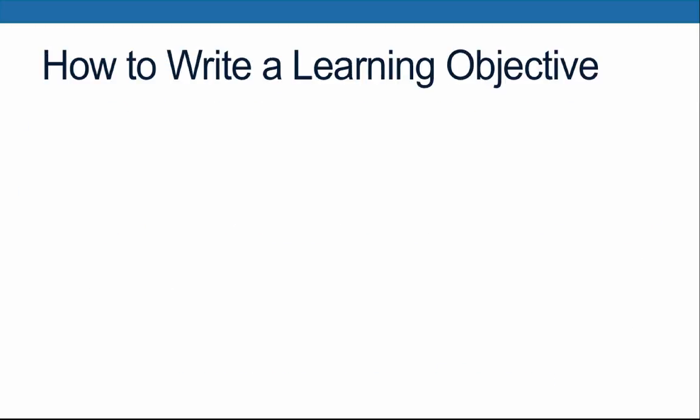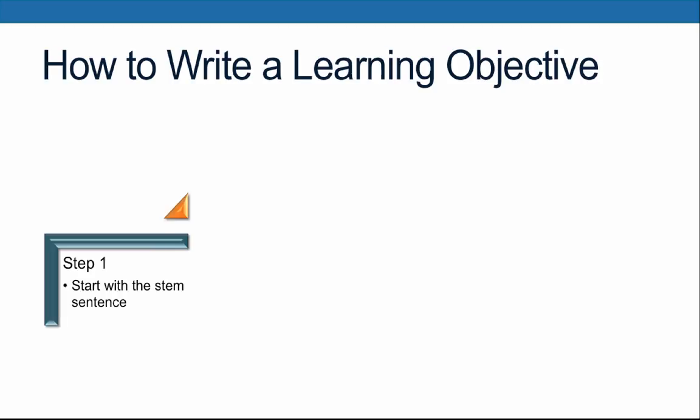Now that we understand Bloom's Taxonomy, let's use what we've learned to construct a measurable learning objective. First, you should start with a STEM sentence. All learning objectives contain a STEM sentence. They are most often written as the STEM sentence with a bulleted list of objectives that follow the STEM. For your course modules, you may want to use the STEM: 'After completing this module, you will be able to.'